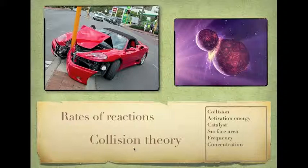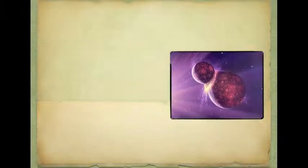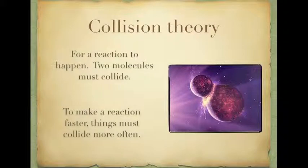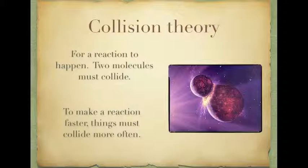Let's have a look at collision theory. What is collision theory? Well, the idea is that for a reaction to happen, two molecules must collide. Without two molecules colliding, we don't get a reaction to occur. In order for atoms to swap around and form different things, they need to hit each other, and then they can start to change form. So a reaction requires a collision.